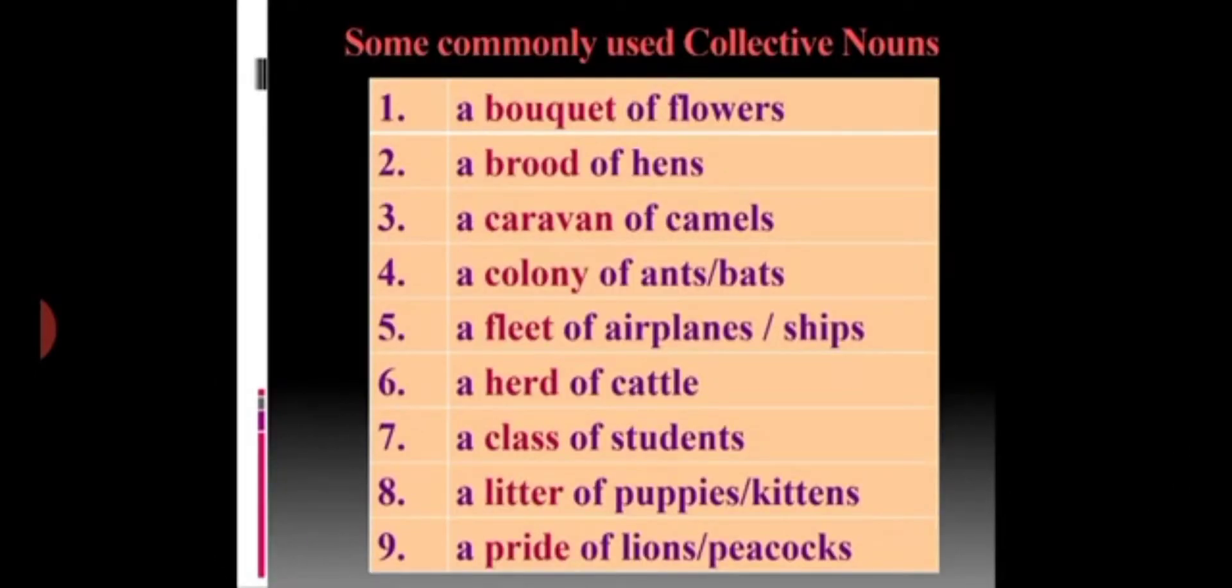In last E part, at night, we saw a galaxy of stars. I hope you all must have understood what are collective nouns. Few more are also there, which we use commonly, like a bouquet of flowers, a brood of hens, a caravan of camels, a colony of ants or bats, a fleet of airplanes or ships, a herd of cattle, a class of students, a litter of puppies. And last, a pride of lions or peacocks. I hope you all must have understood collective nouns.